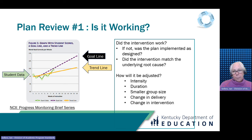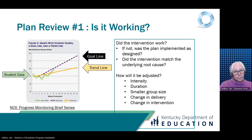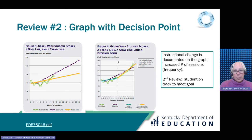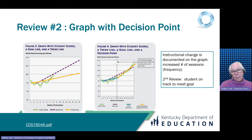Many vendor-published progress monitoring assessments will generate reports with graphs, and if those are not available, it's possible to add a goal line and a trend line using an Excel spreadsheet or Google Sheets. If an instructional change is made, the team will make the needed revisions to the plan, and the instructional changes are noted on the graph as additional data is collected. The team would meet back after another six to eight data points to review progress using the same process and guiding questions outlined in Section 3.